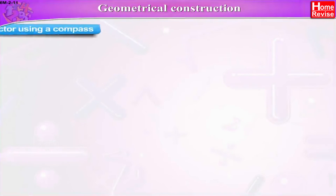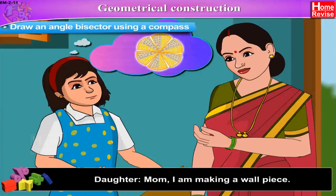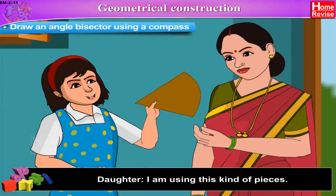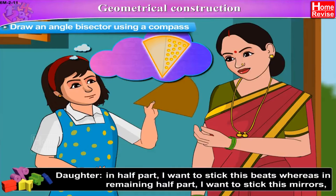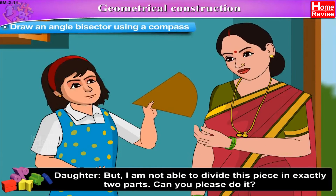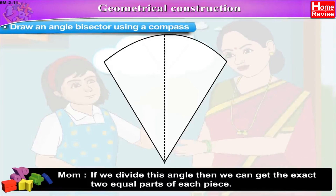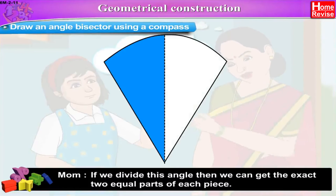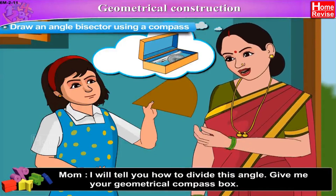Geometrical Construction A: To draw an angle bisector using a compass. Mom, I am making a wall piece. I am using this kind of pieces. I want to decorate these pieces so that in one half part I want to stick these beads, whereas in the remaining half part I want to stick these small mirrors. But I am not able to divide this piece into exactly two parts. Can you please do it? This piece forms an angle. If we divide this angle, then we can get the exact two equal parts of each piece. I will tell you how to divide this angle. Give me your geometrical compass box.